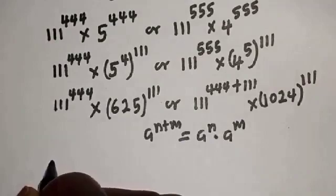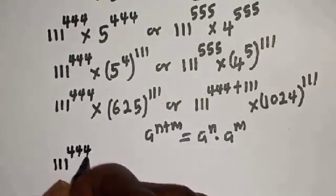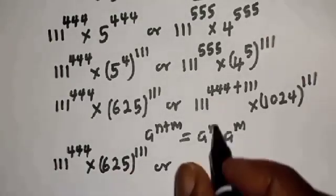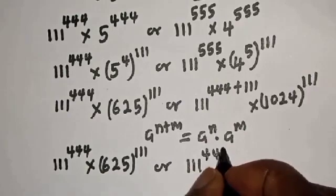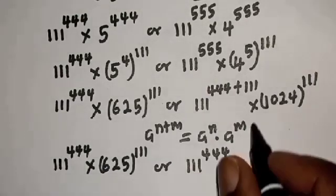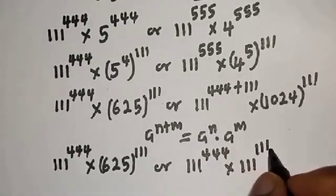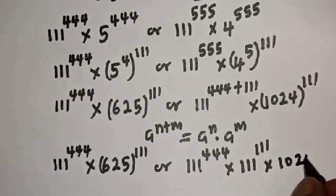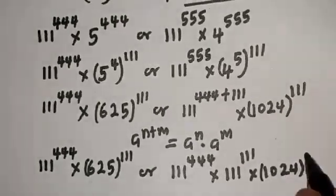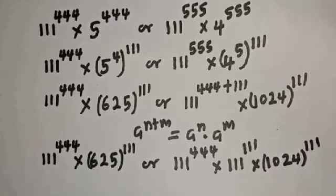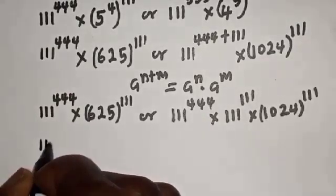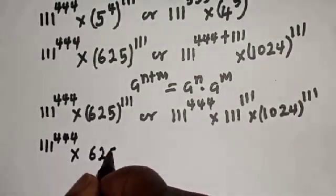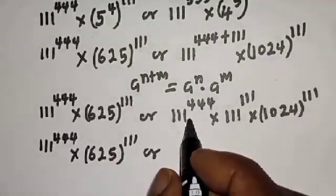Applying this, we get 111 raised to power 444, multiplied by 625 raised to power 111 on the left side. On the right side, we have 111 raised to power 444, multiplied by 111 raised to power 111, multiplied by 1024 raised to power 111.